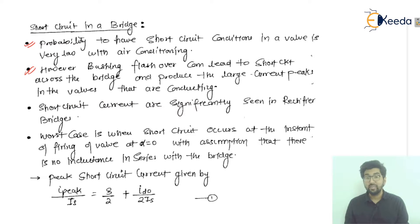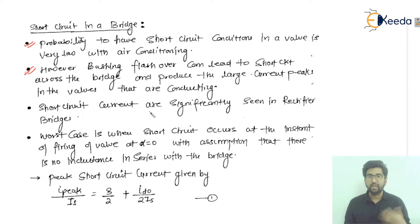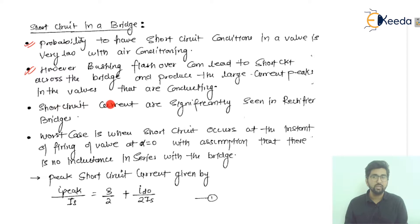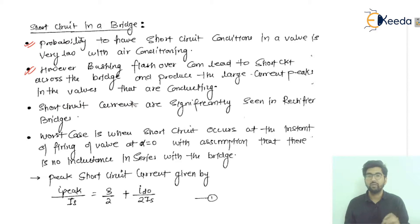Point three specifies that short circuit currents are significantly seen at the rectifier. We have two converter stations: the rectifier and the inverter. The chances of a short circuit current are more significant at the rectifier converter station — generally we see the short circuit condition in the rectifier, not in the inverter.